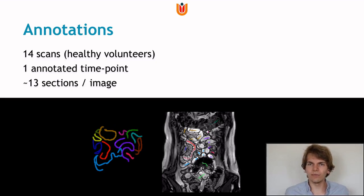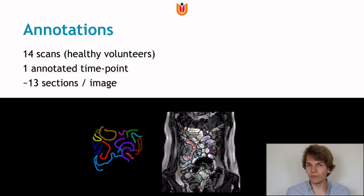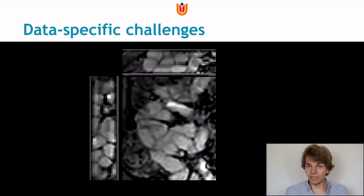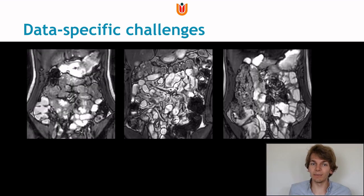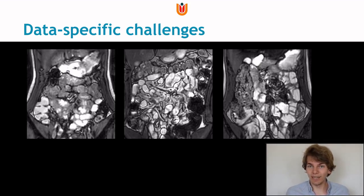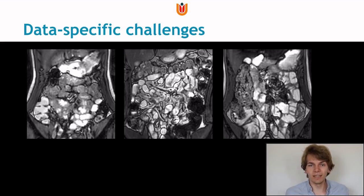In terms of dataset, we have MR images of 14 healthy volunteers. As manual annotations are very labor intensive, we have these annotations for one time point or frame — so in practice that means 14 volumes with annotated center lines, averaging about 13 sections per image. Data-specific challenges include that extracting center lines from the small intestine is very challenging even for a human — sections pass over and under each other and even with multiple views it can be difficult to judge which parts are connected. Additionally, there is a surprising amount of variety in image characteristics: three images acquired on the same scanner with the same protocol can look completely different, due to differences in abdominal fat content and quality of bowel preparation.